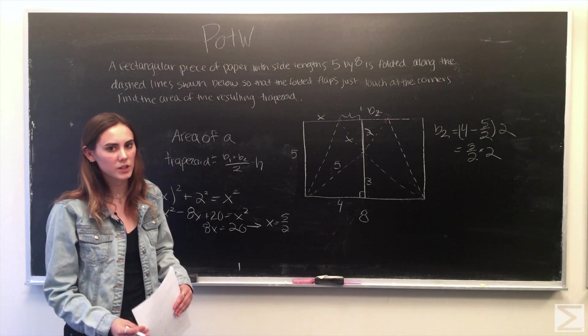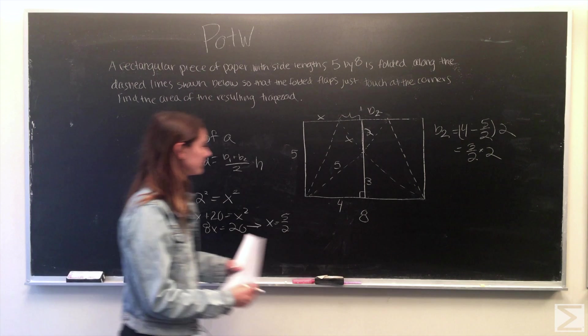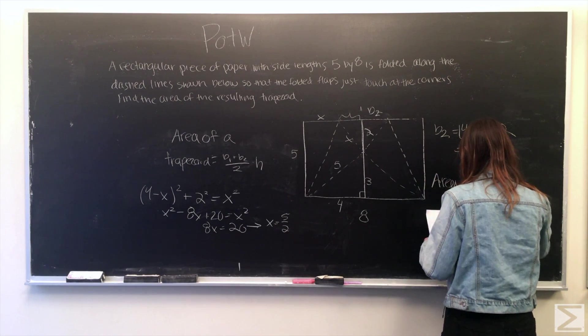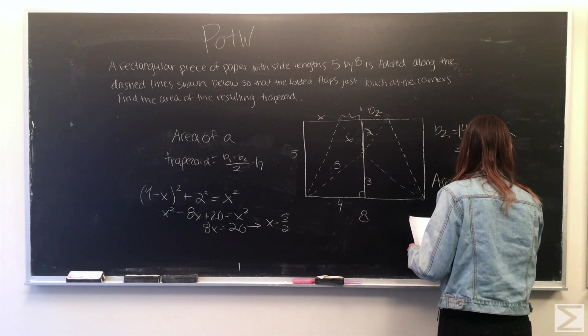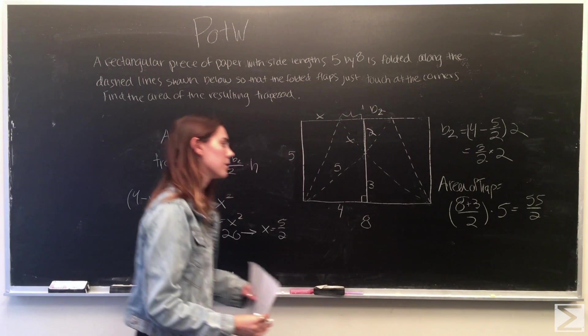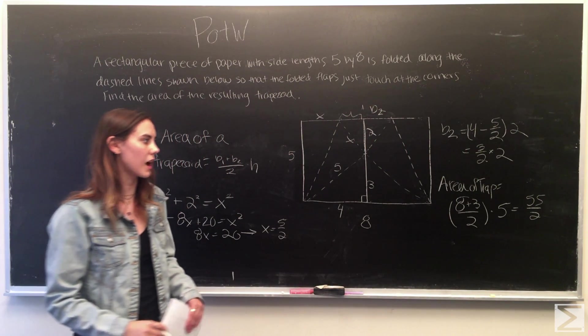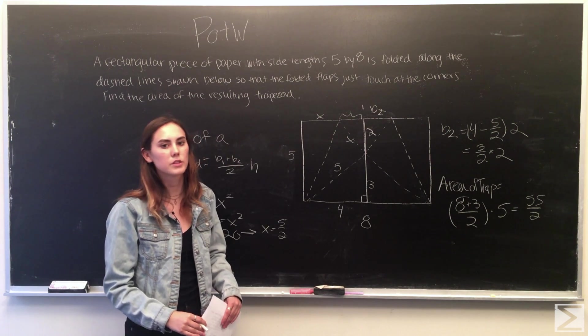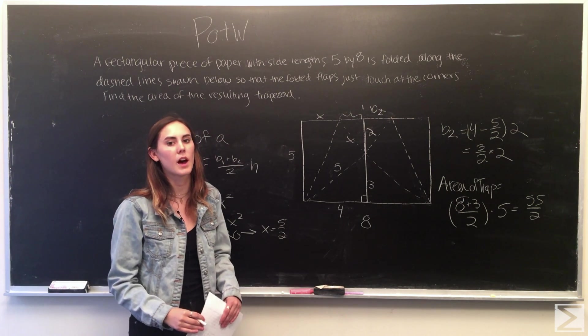Now we just plug everything in and we can solve for the area of the trapezoid. Plugging in we get 8 plus 3 over 2 times 5 is equal to 55 over 2 which is 27.5.